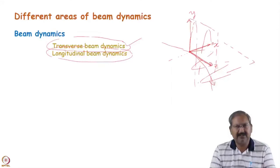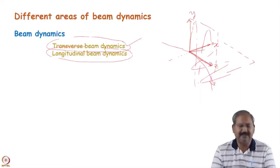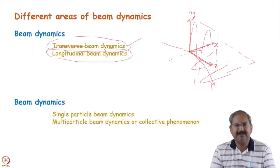When we talk about energy, we are talking about the RF cavity in which a radio frequency electric field is confined. That field provides energy to the particle whenever the particle traverses through that cavity - in one turn it gets energy. So longitudinal beam dynamics is mainly governed by the RF cavity. These are the two basic realms of beam dynamics.